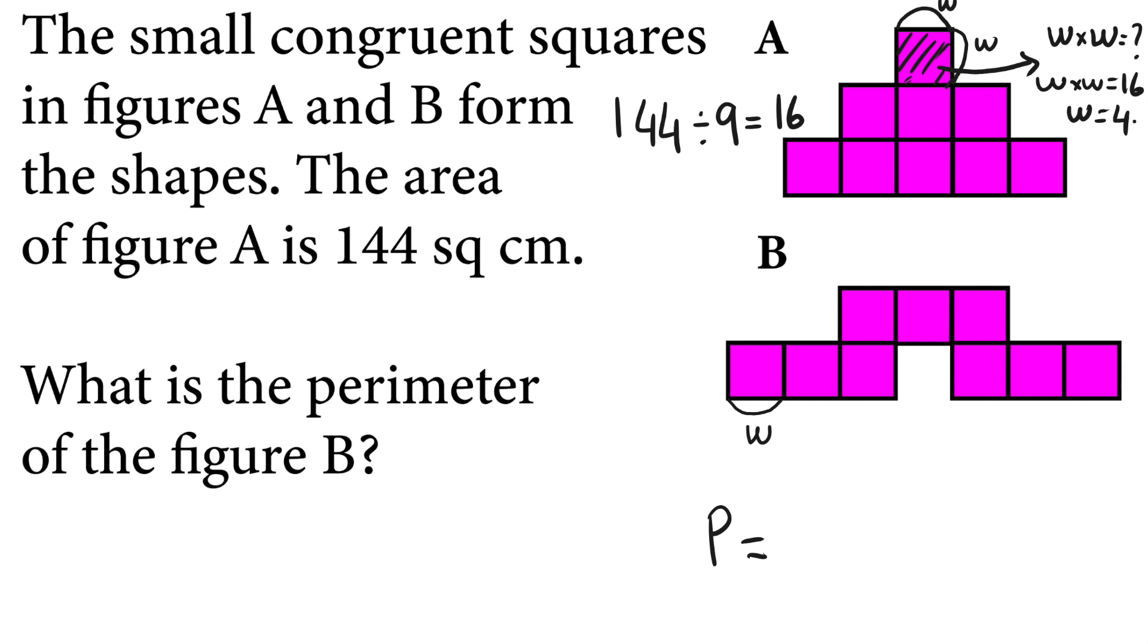So each side length of the squares is 4 centimeters. If we count this figure, how many side lengths do we have? We need to multiply that many side lengths with 4. So w is 4.